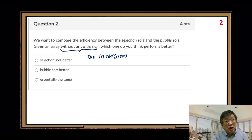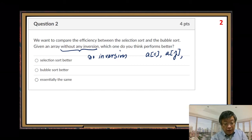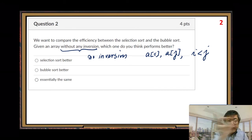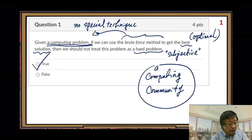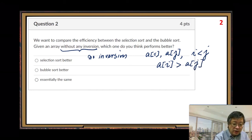Suppose we consider two elements in an array: element A[i] and element A[j]. We assume the array indices satisfy i less than j. So if we look at the index order, we see A[i] first and A[j] second. But if we look at their values, the value order is just the opposite — the value order will be A[i] greater than A[j]. That is the meaning of inversion.